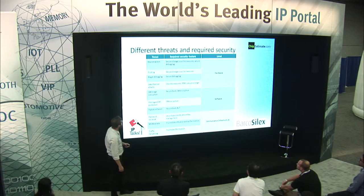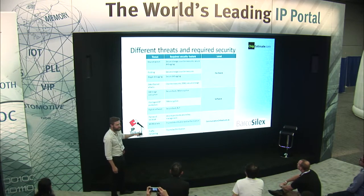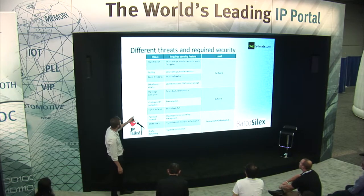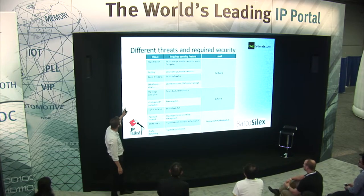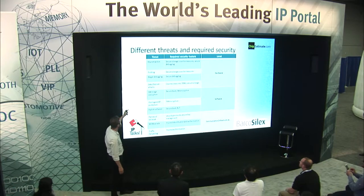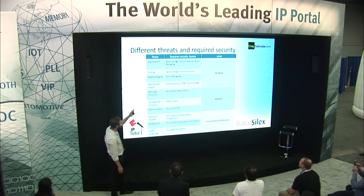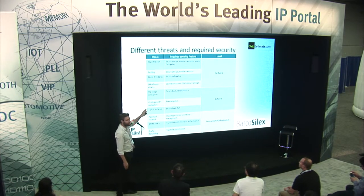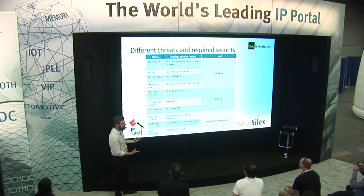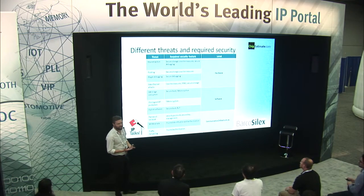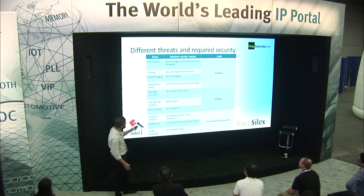Looking at the different layers of a connected device — hardware, software, and the infrastructure in which it is embedded — there are threats at each layer. You can have key extraction, probing, illegal debugging, side-channel attacks, and software corruption, among others. For each of these threats a specific security feature is required to tackle the issue. The typical encryption that everybody thinks is enough to secure a device is only one of the features needed to build a secure system.